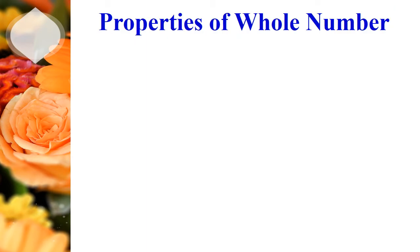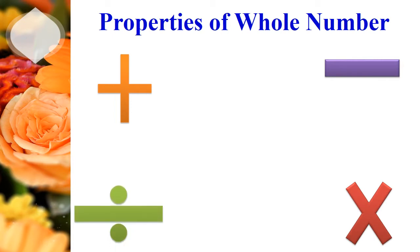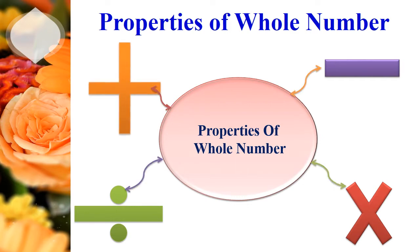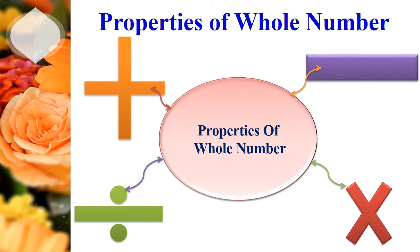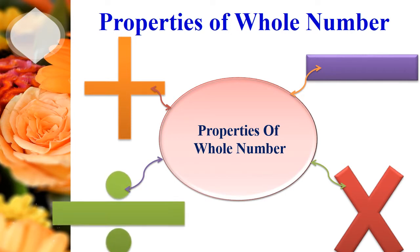Now let's see properties of whole numbers. We already know, children, we have 4 arithmetic operations: addition, subtraction, multiplication, and division. The properties of whole numbers are based on these arithmetic operations — property of addition, property of subtraction, property of multiplication, and property of division. Properties of whole numbers help us to understand numbers better.